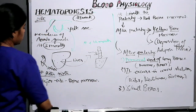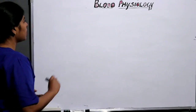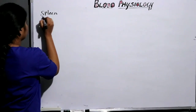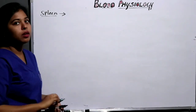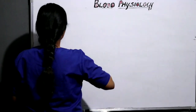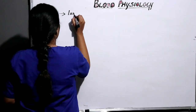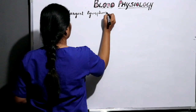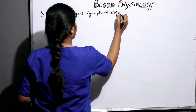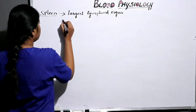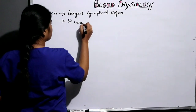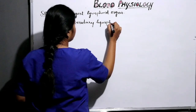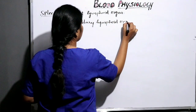That's all about hematopoiesis. Next we will be discussing about the spleen. The spleen is the largest lymphoid organ, and it is a secondary lymphoid organ.